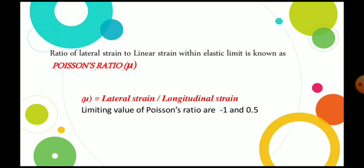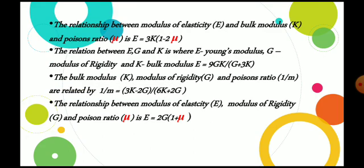Poisson's ratio, mu, is equal to lateral strain by longitudinal strain. The range of Poisson's ratio is minus 1 to 0.5 — this is very important. Young's modulus is also called modulus of elasticity or elastic modulus; all are the same.